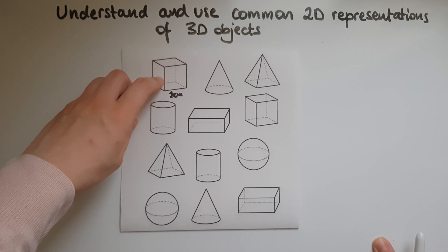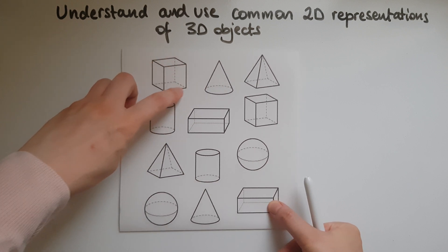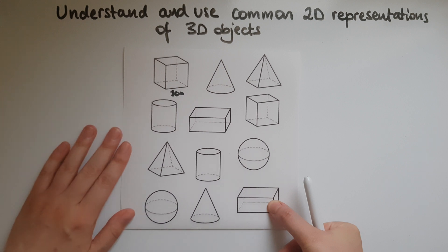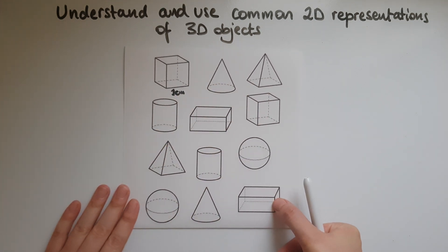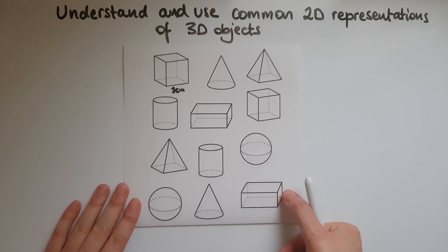And where are the corners or the vertices and also the edges. Where are the bases, by looking at them we should be able to identify them.